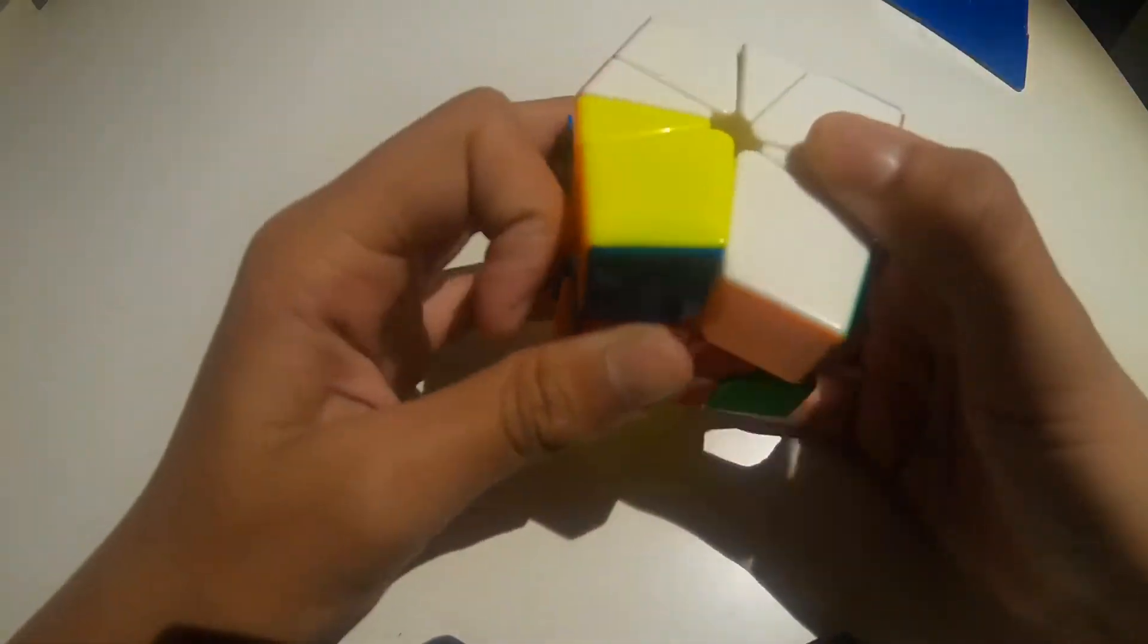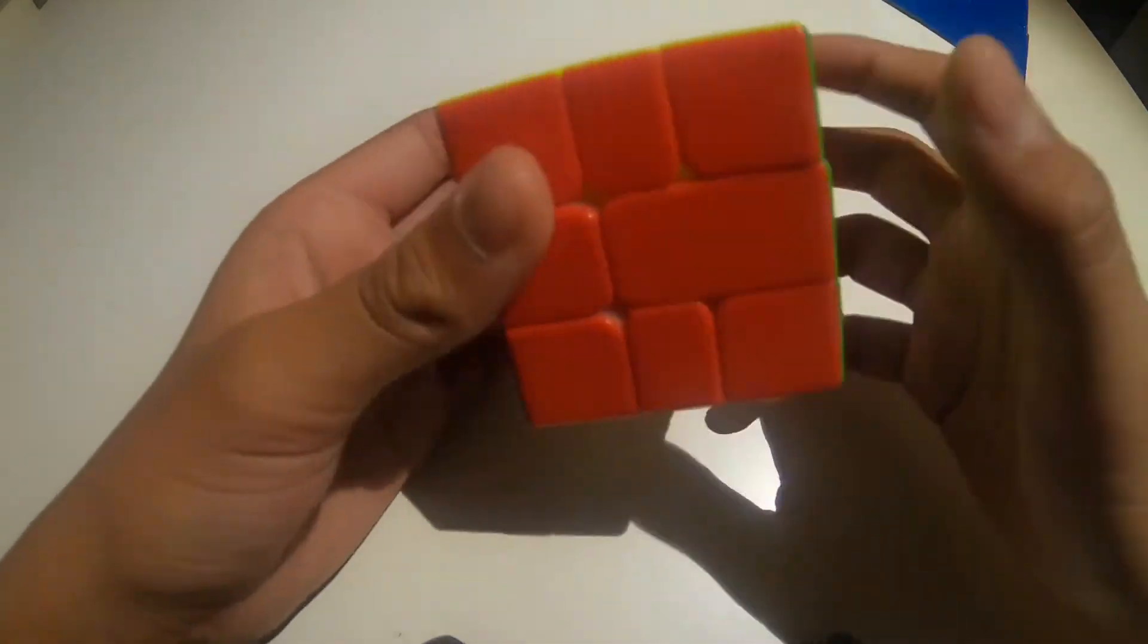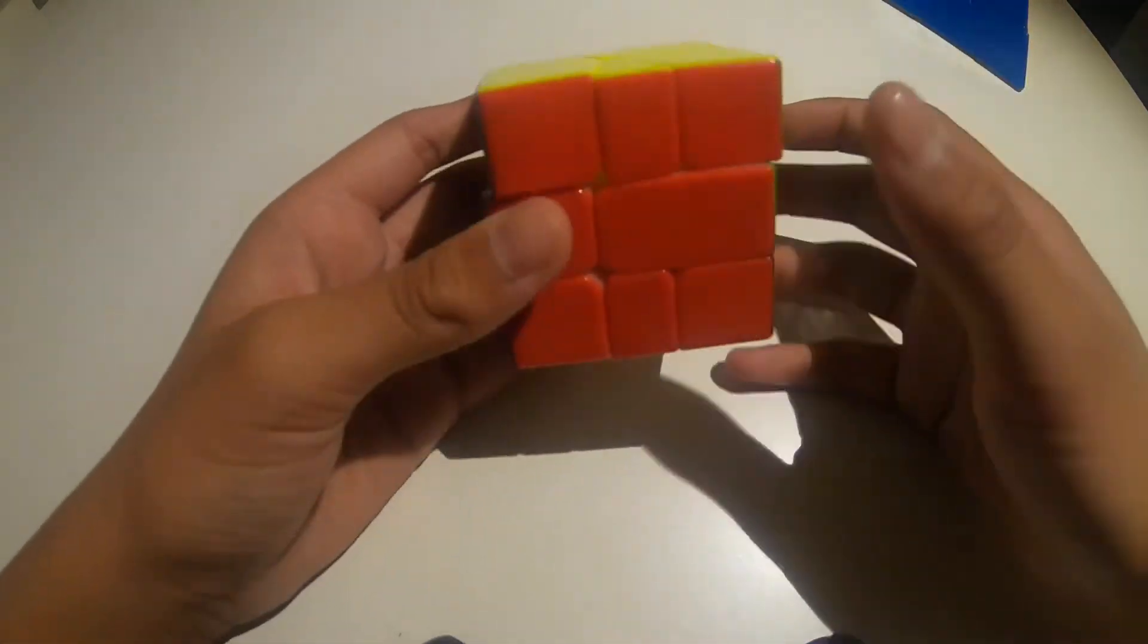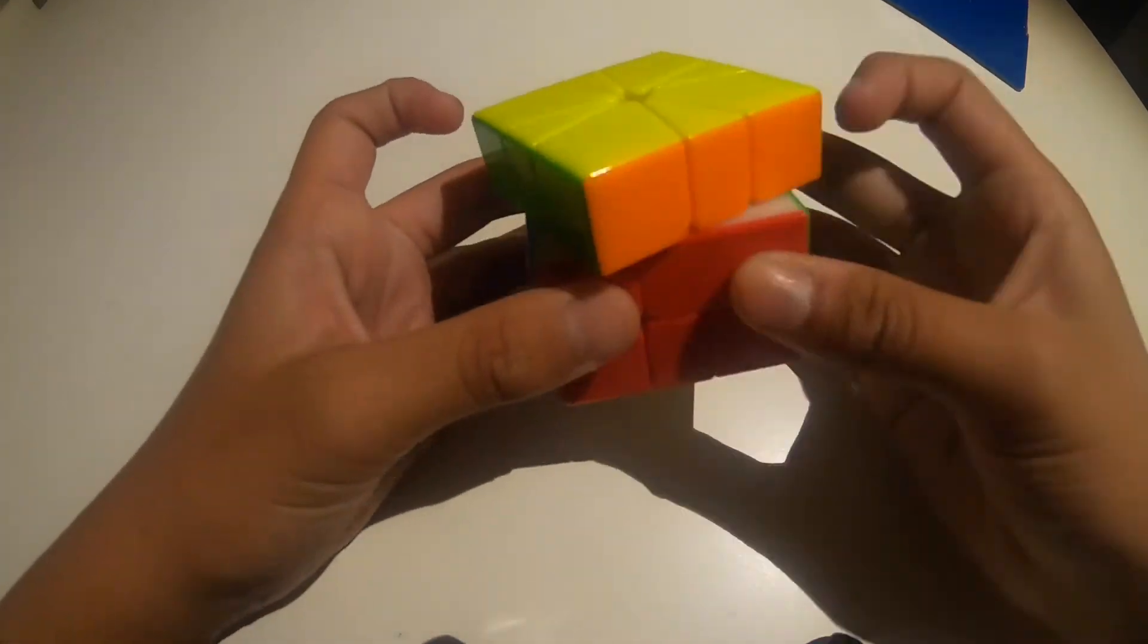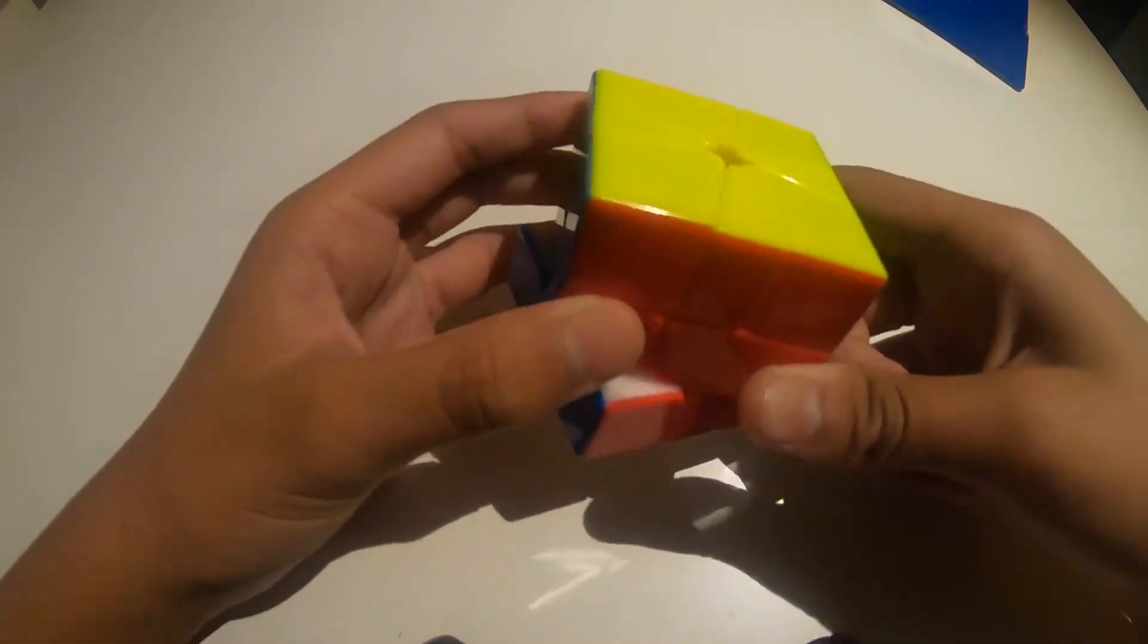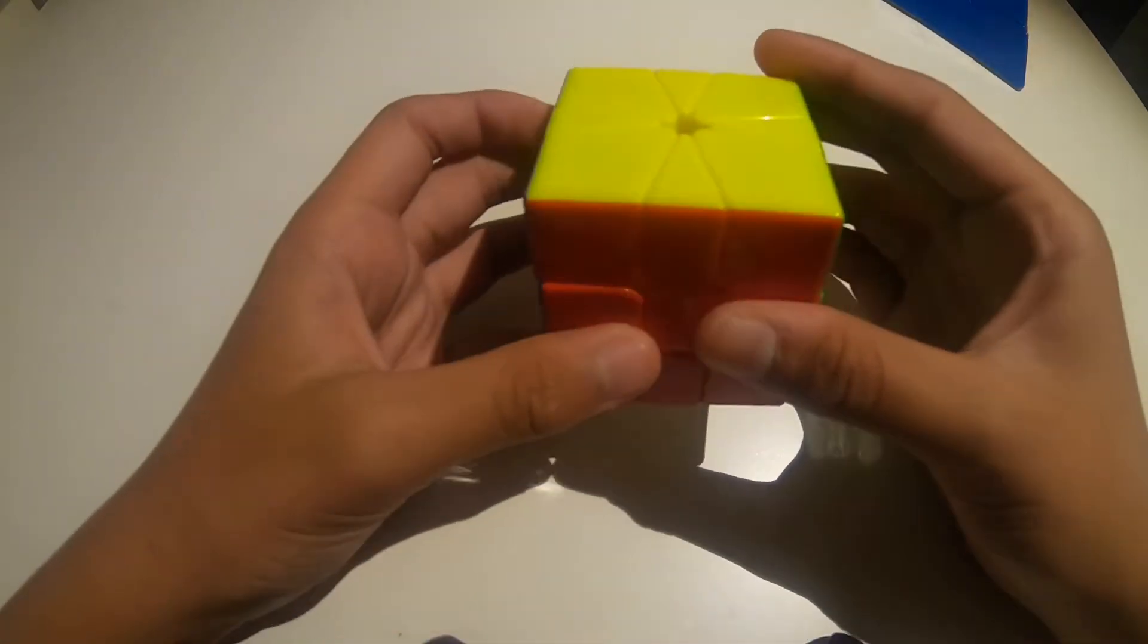This puzzle, as you can see as I'm turning it, shapeshifts quite a lot. So if I were to scramble it, okay actually, firstly, how this puzzle works is basically there's a top layer, there's a bottom layer, and there's a slice layer. It looks pretty simple.